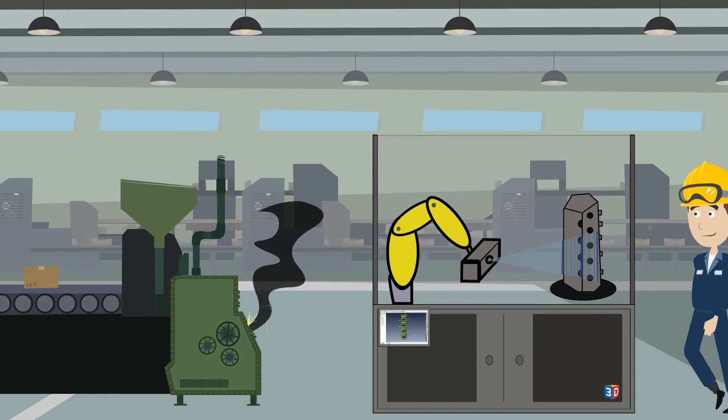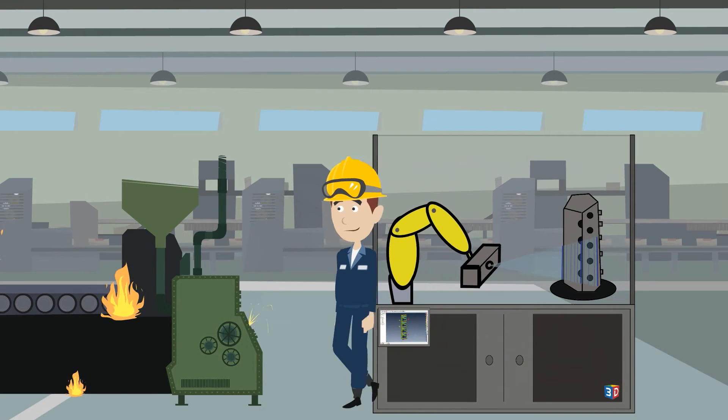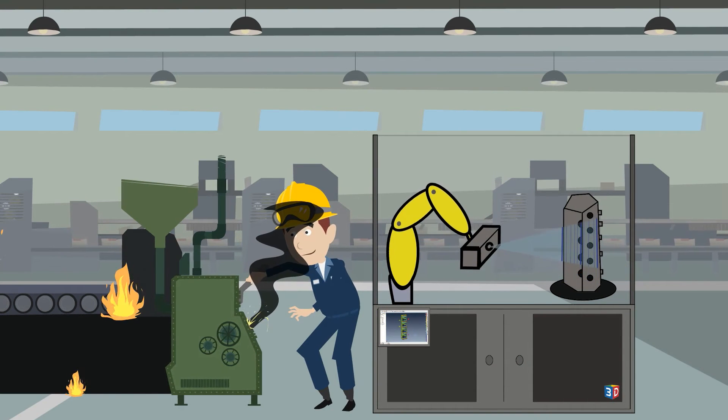It also creates trend charts, which indicate how the machine is producing the part inaccurately, allowing James to make the correct adjustments.